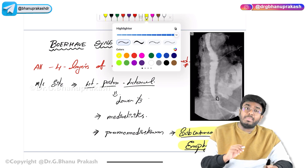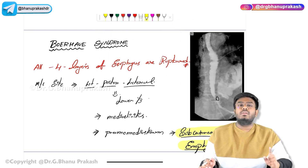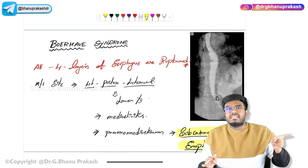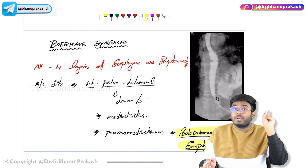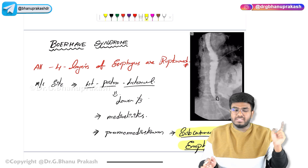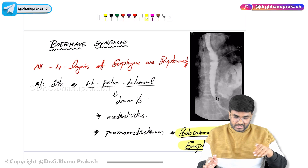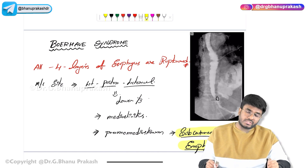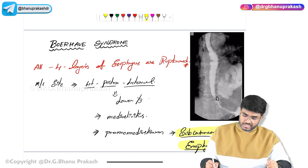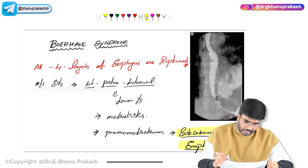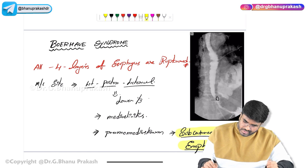Boerhaave syndrome is a complete rupture, while Mallory-Weiss is a superficial tear. Boerhaave is the more dangerous condition compared to Mallory-Weiss.